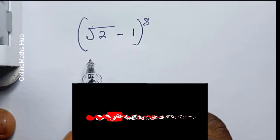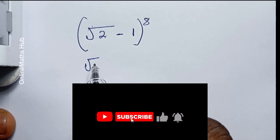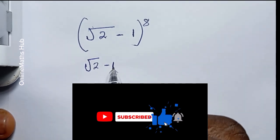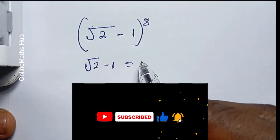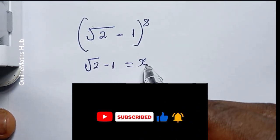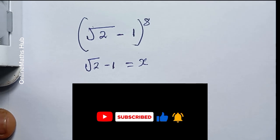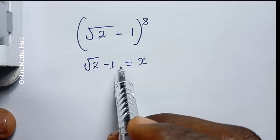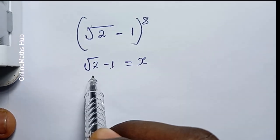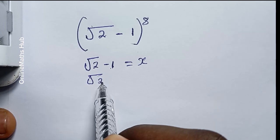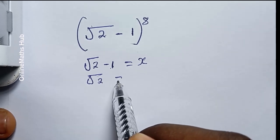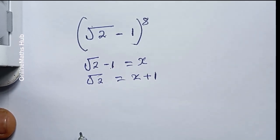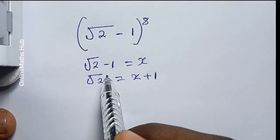What I'm going to do is set the stuff inside the bracket — that is √2 minus 1 — to be equal to a variable, let's say x. Then at this point I'm going to move 1 to the right-hand side, so that I have √2 is equal to x plus 1.